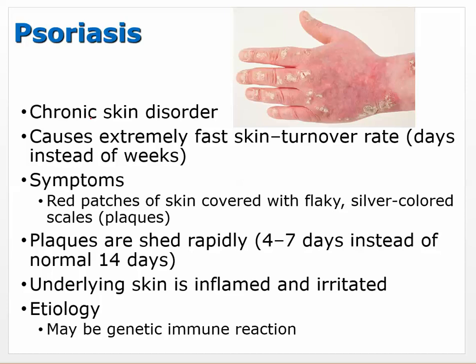Psoriasis is a chronic skin disorder that causes an extremely fast skin turnover rate. Normal skin regeneration is about two to three weeks, but someone with psoriasis can experience turnover in as little as four to seven days. Symptoms include red patches of skin covered with flaky silver-colored scales, with underlying skin that is inflamed and irritated. The etiology may be genetic — it is more common in people of European descent — but environmental factors can also trigger flare-ups.